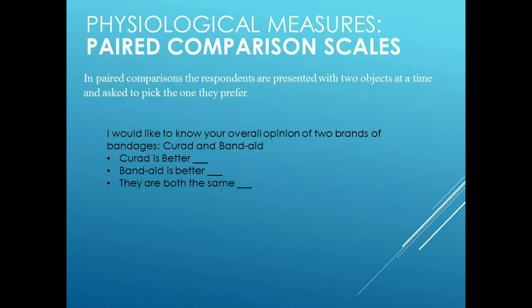We also have the paired comparison scale. Respondents are presented with two objects at a time and asked to pick which one they prefer — essentially forcing a choice. For example: 'We'd like to know your overall opinion of two brands of bandages: Q-Red and Band-Aid. Which is better — Q-Red, Band-Aid, or both are the same?' That is a simple example of a paired comparison. Those are the key questionnaire-type questions that allow us to look at a psychological response to an attitude.